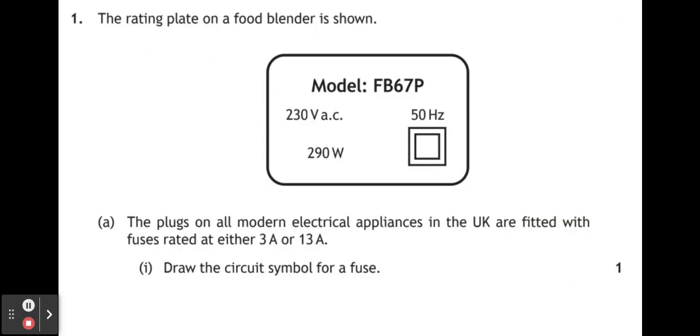Question number one says the rating plate on a food blender is shown. We can see on the plate its model number, that it is to work on the 230 volts AC mains at 50 hertz, and the power of the appliance is 290 watts. The square inside the square actually means it's double insulated, which means it doesn't require an earth wire, although that's not important here.